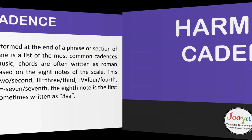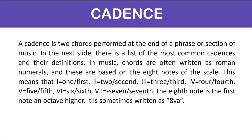A cadence is two chords performed at the end of a phrase or section of music. In music, chords are often written as Roman numerals, based on the eight notes of the scale: I is one or first, II is two or second, III is three or third, IV is four or fourth, V is five or fifth, VI is six or sixth, VII is seven or seventh, and the eighth note is the first note an octave higher.